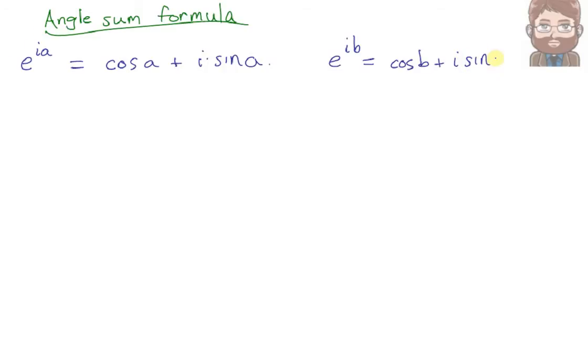Now, just like before, we'll take these two equations and multiply them together. e to the ia times e to the ib equals cosine a plus i sine a times the quantity cosine b plus i sine b.